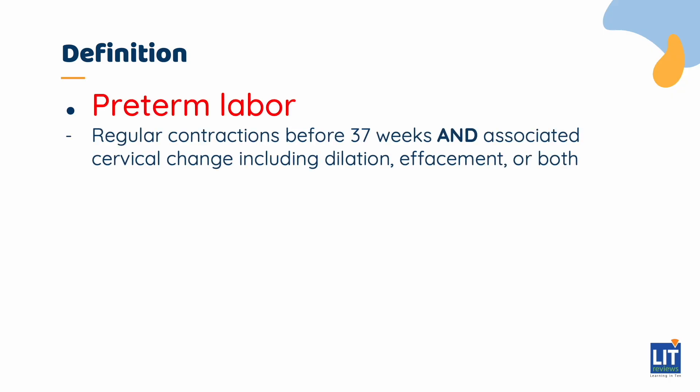Preterm labour is defined by regular, organised contractions occurring before 37 weeks of gestation and accompanied by cervical change, including dilation, effacement, or both. Both contractions and cervical change must be present in order to have a diagnosis of preterm labour.